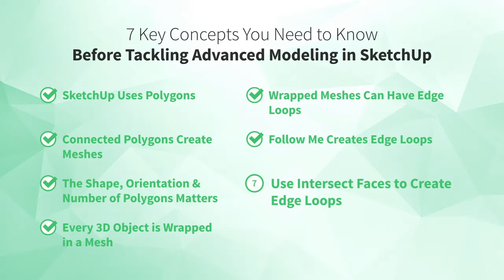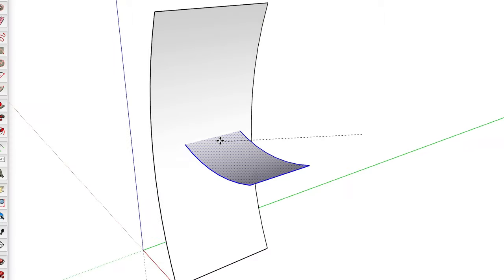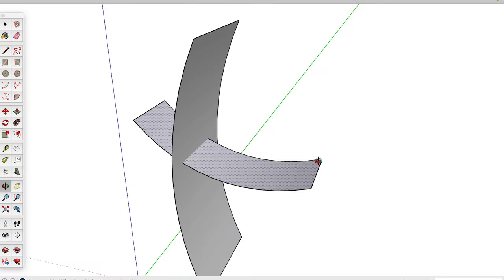Number seven: use intersect faces to create edge loops. When polygons on different planes pass through one another in SketchUp, their faces don't connect, so they're not part of the same mesh. SketchUp notices that the faces intersect, but without a shared edge, those two faces aren't connected. So why does that matter? Well, in SketchUp, there are many modeling challenges that are best solved by figuring out how to overlap two or more shapes and then either combine them or delete one or more of the overlapping elements.